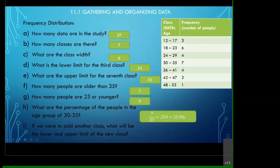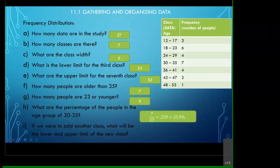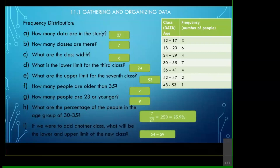Lastly, if we were to add another class, what would be the lower and upper limits of the new class? If we add an eighth class, we need to add six data points, because every time you jump from one class to the next you add six. So the next number after 53 would be 54 — that's the lower limit. The upper limit is 53 plus 6, which gives us 59.